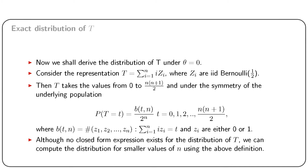Under theta = 0, each value of zi is equally likely, and we have 2^n such possible values of z1, z2, ..., zn. Thus P(T = t) = b(t,n) / 2^n, for t running from 0 to n(n+1)/2, where b(t,n) is the number of n-tuples z1, z2, ..., zn such that summation i from 1 to n of i·zi = t is satisfied. Although no closed form expression exists for the distribution of T, we can compute the distribution for smaller values of n using this definition.